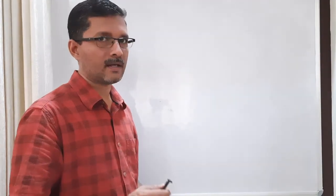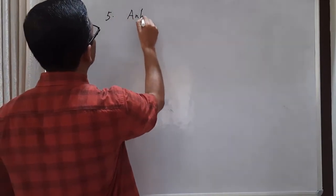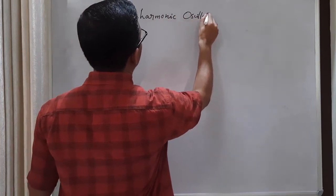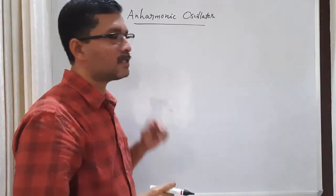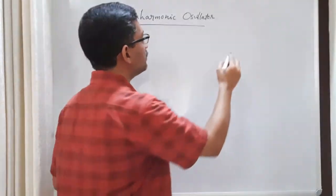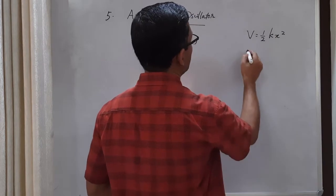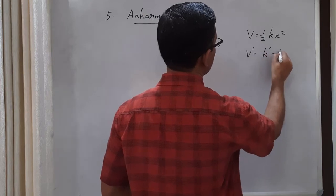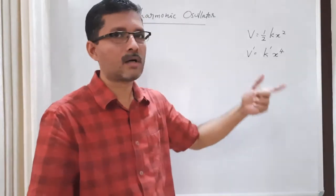In the next problem, we will discuss anharmonic oscillators. The idea is that the potential experienced by this oscillator is not simply a quadratic potential. In a harmonic oscillator, we know that the potential is (1/2)kx². Now, let us apply a perturbation, something like k′x⁴. This is called a quartic term.